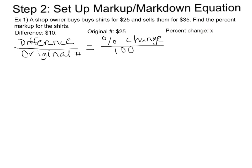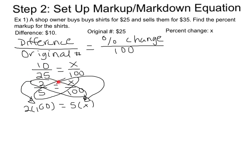Now we need to set up our equation. It's always going to be the difference in values over the original number, equal to the percent change over 100. We substitute our numbers: 10 over 25 equals x over 100. Since 10 and 25 are both divisible by 5, we simplify to 2 over 5. Using cross products: 2 times 100 equals 5 times x, giving us 200 equals 5x. Dividing both sides by 5, we get x equals 40.